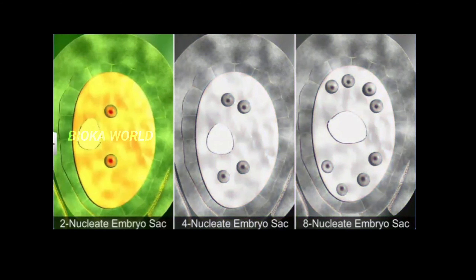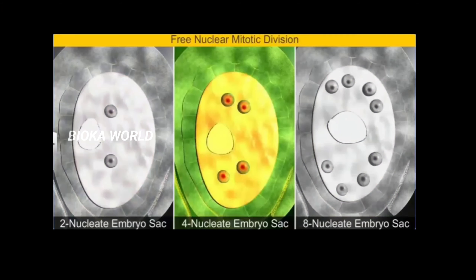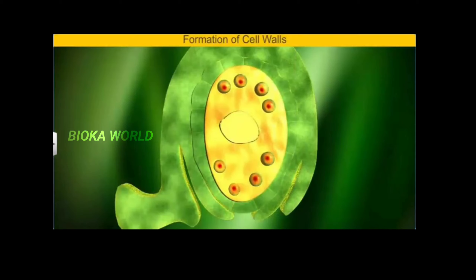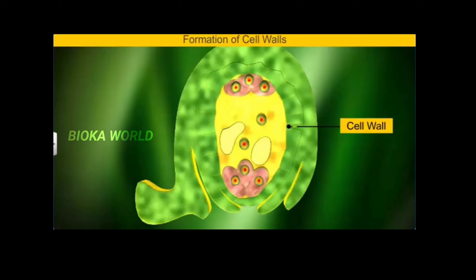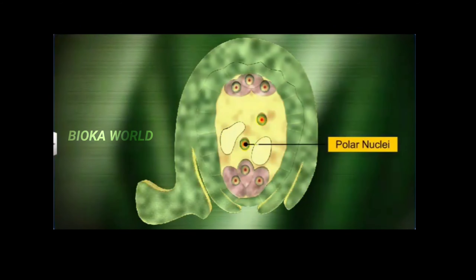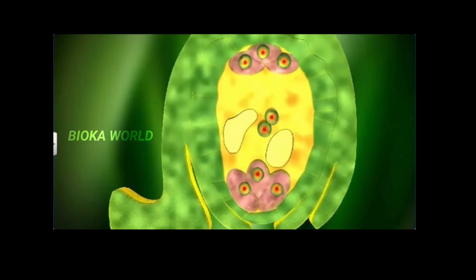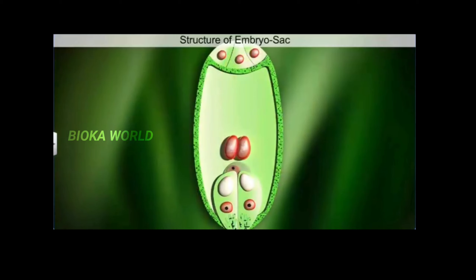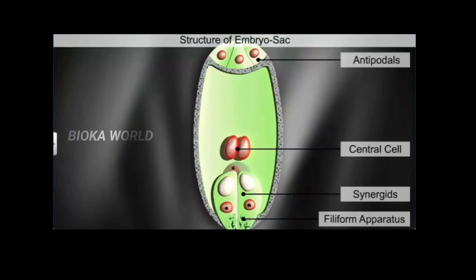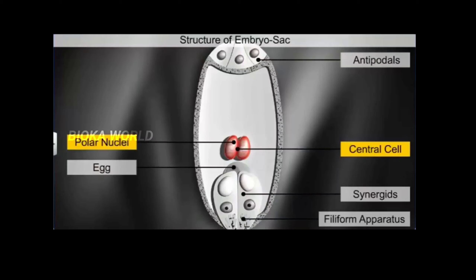Interestingly, the mitotic divisions that occur in a megaspore nucleus are free nuclear, which means the division of the nuclei doesn't immediately trigger cytoplasm division and cell wall formation. Instead, we see the formation of cell walls only after the eight-nucleate stage, due to which six of the eight nuclei organize into cells. The two remaining nuclei, called polar nuclei, migrate to the center of the embryo sac. Thus, we find the embryo sac to be in a seven-celled and eight-nucleated stage, with six cells at the poles and a large central cell with two nuclei in the center.